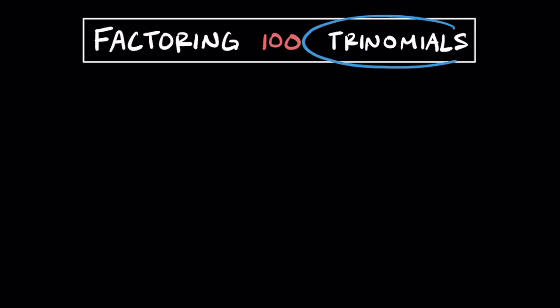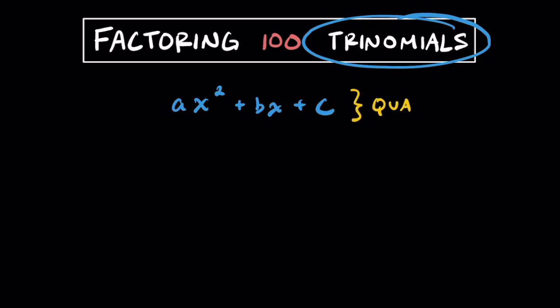Hey everyone, I hope you're doing well today. In this video, I'm going to be factoring 100 different trinomials. When I say trinomials, I'm talking about these things that look like this — they typically come in the form of ax squared plus bx plus c. Specifically, these are going to be representing quadratics.